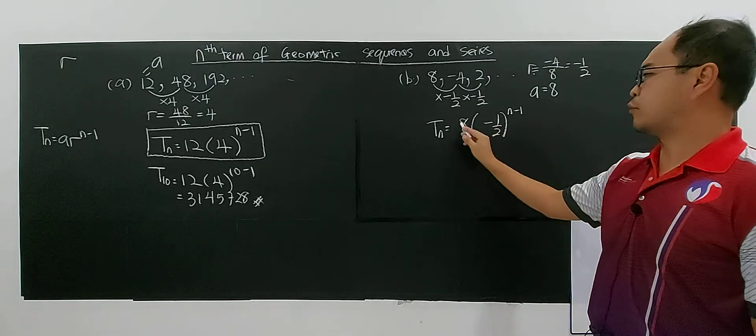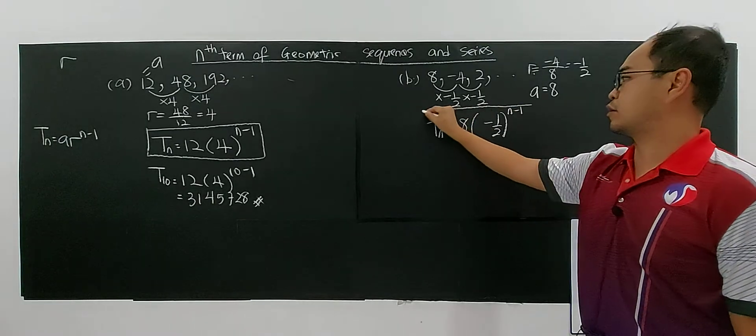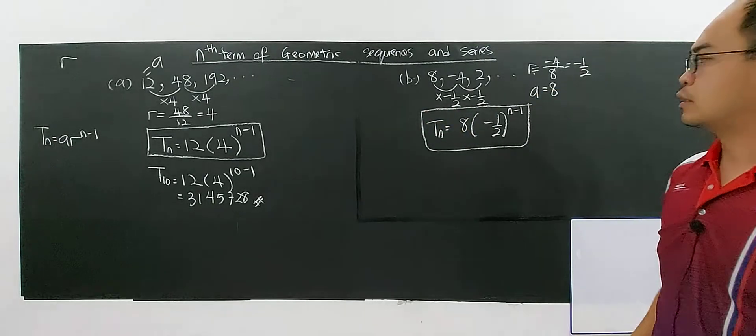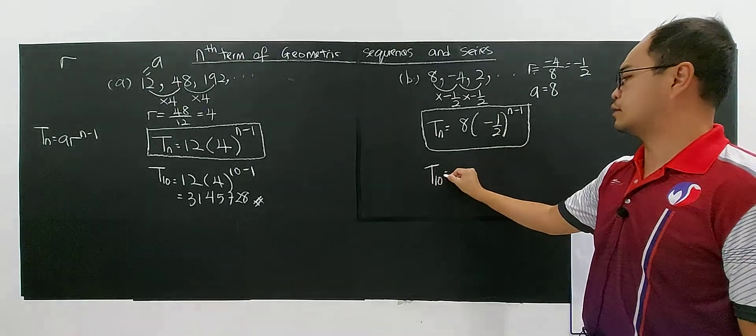If you want to simplify this, become 2 power of 3 index, it's okay. But to avoid mistakes, if you are careless, you don't do this. So you just leave it in this form.